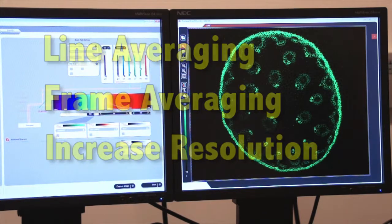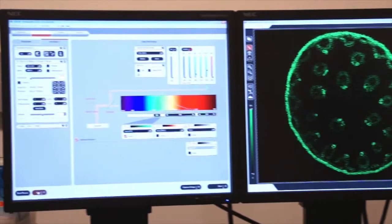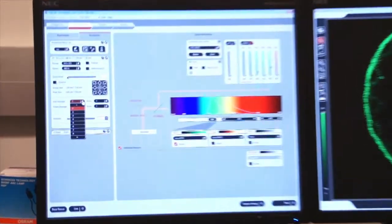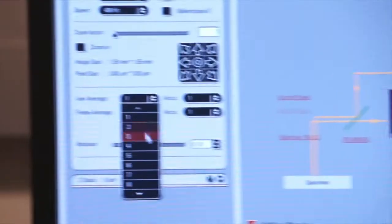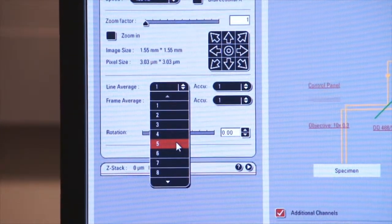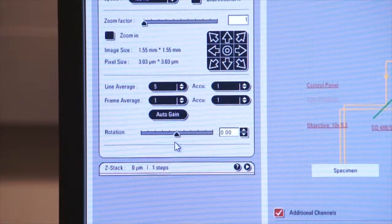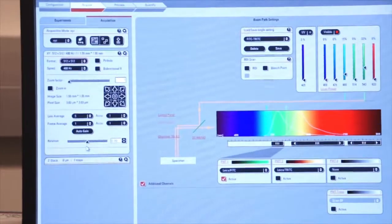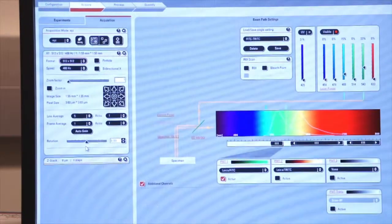So we'll click stop and we're going to come over to the left screen and we're going to select the pull down menu for line average. Let's do six line averages. So what are we actually doing? When I select six, I'm telling the system to read each line six times. And then make a final output image.